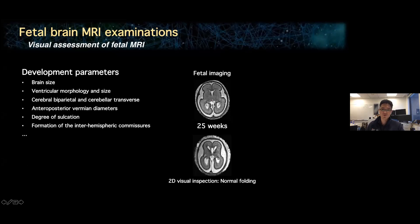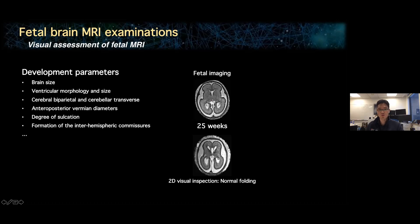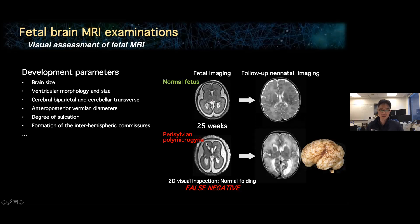Here is an example of two fetal brains at 25 weeks of gestational age. From fetal MRI, they were both judged to have normal structure and normal folding. But when checking follow-up neonatal imaging, one brain still looked good while the other was diagnosed as parasagittal polymicrogyria. So to better quantify and detect brain abnormalities, we need computational processing and analysis for fetal brain MRI.